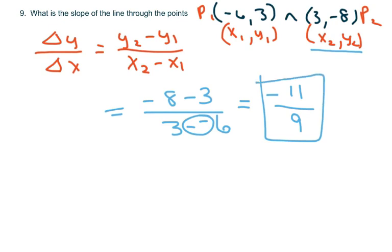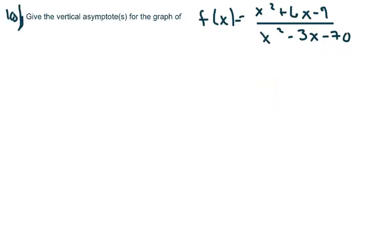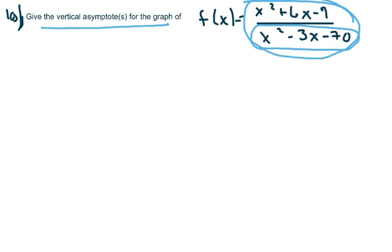And the last one. Give the vertical asymptotes of the graph. This is a rational. You have to be careful here. Because usually the vertical asymptotes comes from the denominator basically. So I'm going to go ahead and factor the numerator and the denominator.